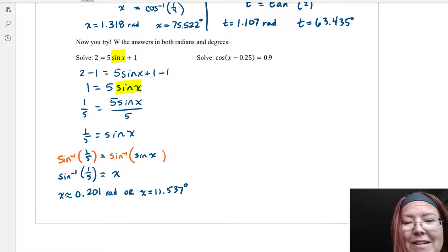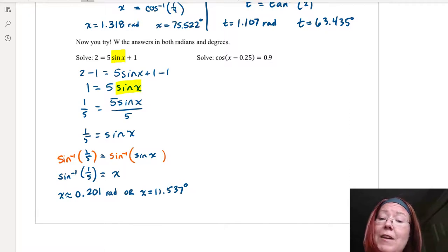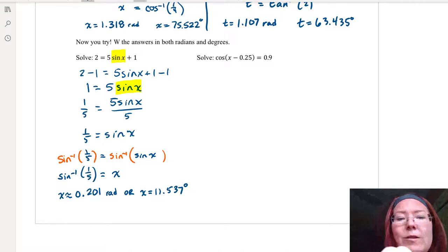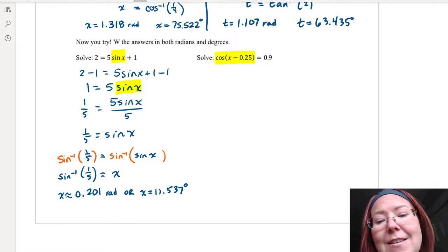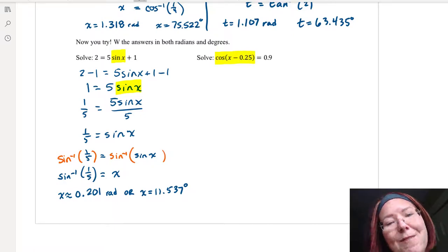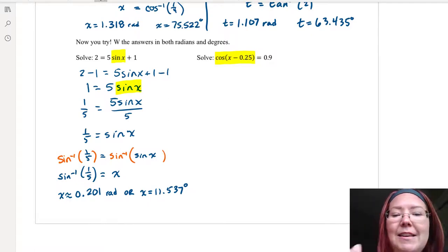Okay, the final one: solve cosine of x minus 0.25 equals 0.9. Now notice that I do have the trig function isolated. It has some stuff inside of it, but it is isolated without anything added, subtracted, or multiplied from it. So I am going to go ahead and take the inverse right here.